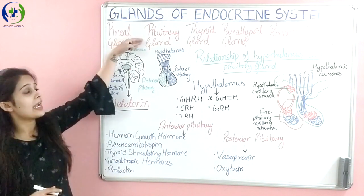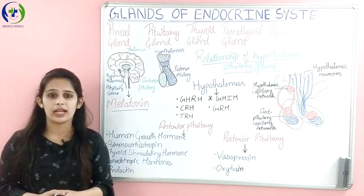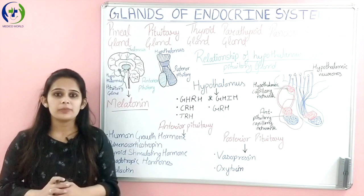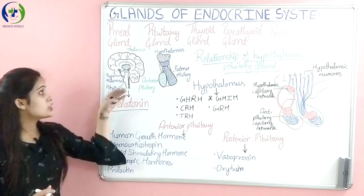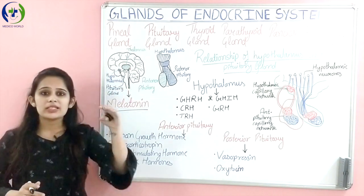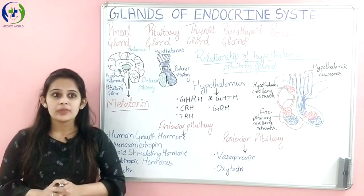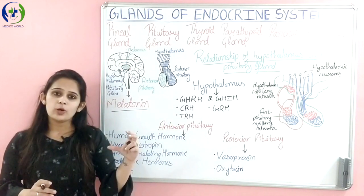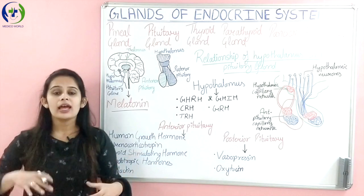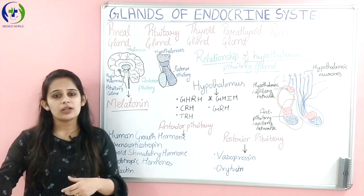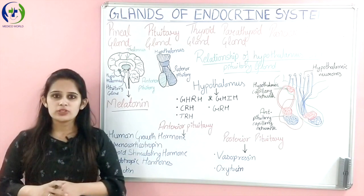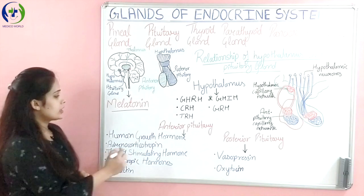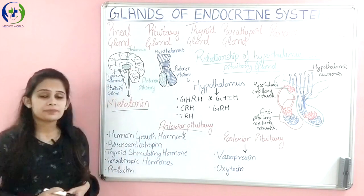The next major gland is the pituitary gland. The pituitary gland is the most important and the major endocrine gland. It is situated at the base of the brain. The pituitary gland has two lobes: the anterior lobe forming the anterior pituitary gland and the posterior lobe forming the posterior pituitary gland. Now let's first study about the anterior pituitary gland.